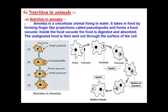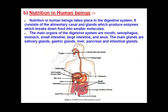This whole diagram is from the class 9th NCERT, which you must be recalling. Now let us move to nutrition in human beings. Nutrition in humans takes place in the digestive system, which consists of the alimentary canal and different glands. The main organs of the alimentary canal include the mouth, esophagus, stomach, small intestine, large intestine, and anus.